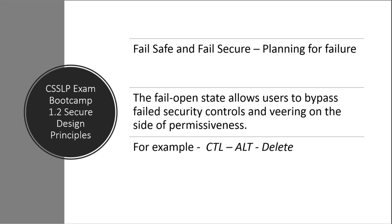When it comes to fail open, this state is going to allow users to bypass failed security controls, and essentially it veers on the side of permissiveness. For example, if there is an issue on your desktop — like Windows locking up — sometimes we need to get out of that browser window or Outlook, and to do that we may need to go to the performance monitor and do Control+Alt+Delete to terminate a process. It's all about leaving the right switches open and the right functions available to be executed when we want to execute them.